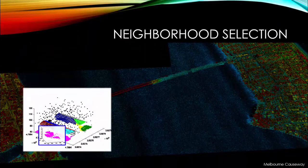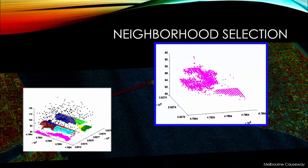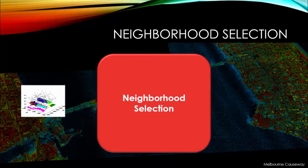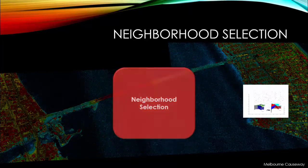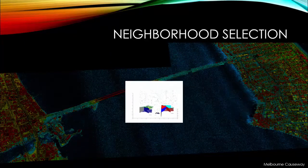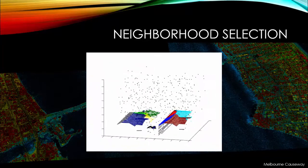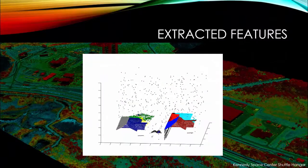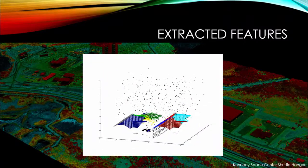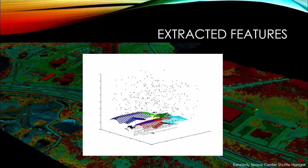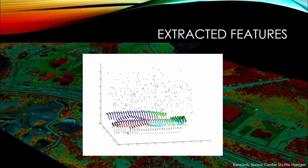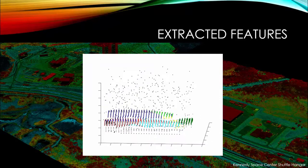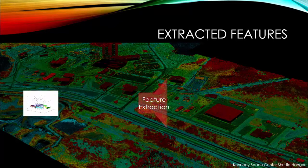The neighborhood selection step is where we differentiate good from bad clusters. The pink cluster in the image is a bad cluster because it represents more than one object. When we run the clusters through neighborhood selection, we expect the pink points to be removed from the collection of clusters. After neighborhood selection, we extract features from the good clusters.